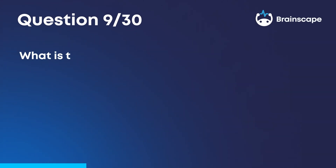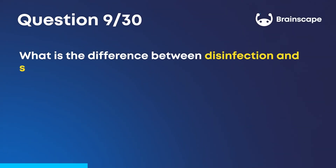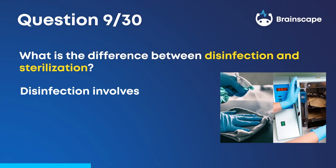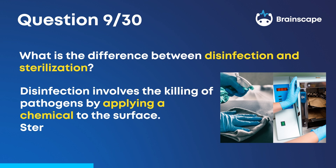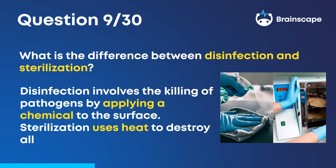Question 9. What is the difference between disinfection and sterilization? Disinfection involves the killing of pathogens by applying a chemical to the surface. Sterilization uses heat to destroy all microbial contaminants.